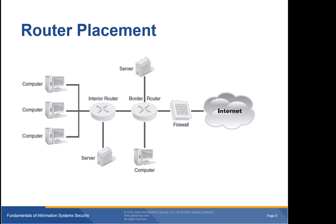For example, an internal router between a research department network and the rest of the organization can keep the two networks separate and keep confidential traffic inside the research department. You can configure routers to allow all traffic to pass or to protect some internal resources. Routers can use network address translation (NAT) and packet filtering to improve security. NAT uses an alternate public IP address to hide a system's real IP address, making it more difficult for an attacker to identify the layout of networks behind a firewall.